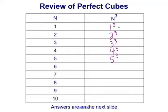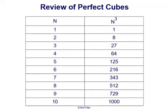That's equal to 1 times 1 times 1, then 2 times 2 times 2, then 3 times 3 times 3, and so on. Let's complete the first 10 perfect cubes. So: 1 cubed is 1, 2 cubed is 8, 3 cubed is 27, 4 cubed is 64, 5 cubed is 125.